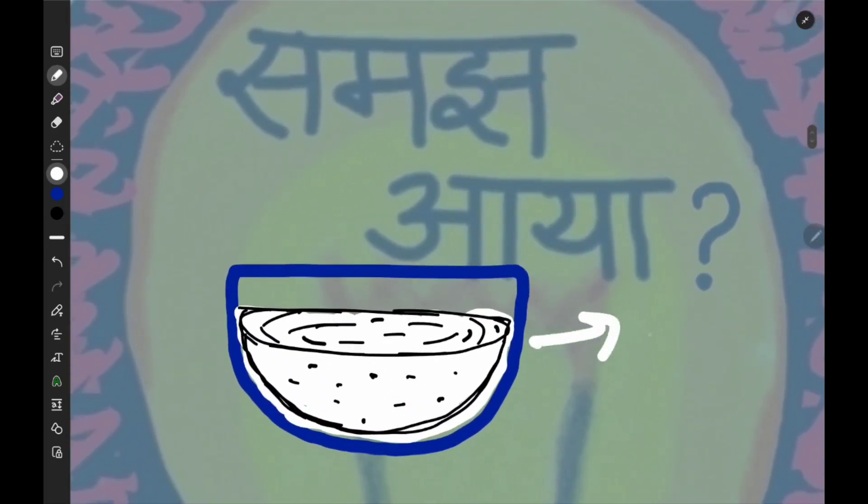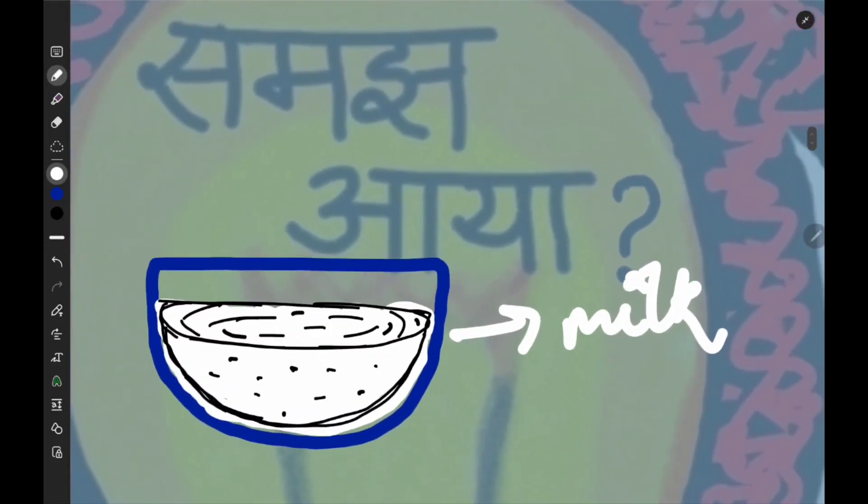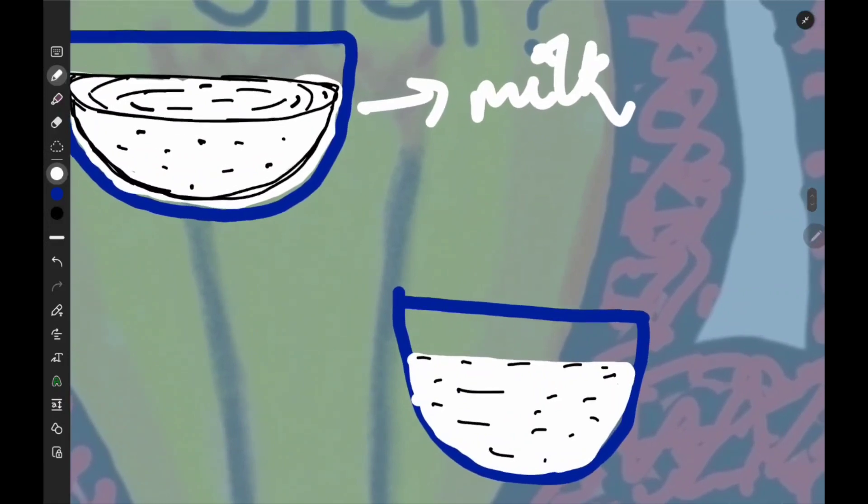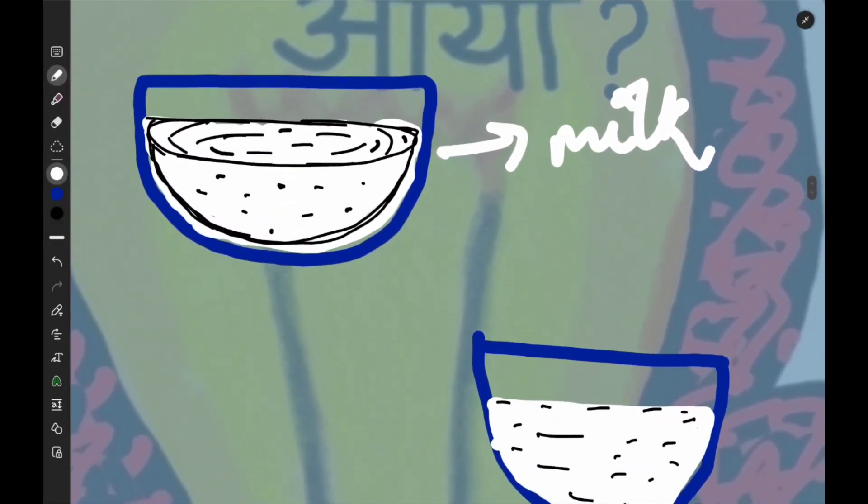This is our bowl, we have added milk, which color is white. Now we will have to warm it up. After that, we will have to warm it up.